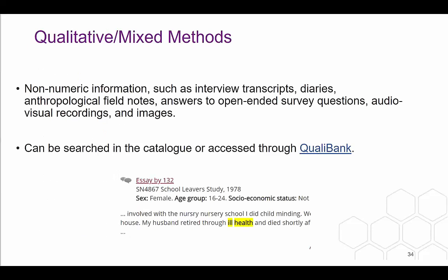The last type of data to be covered today is qualitative and mixed methods data. Qualitative data are non-numeric information — they can be interview transcripts, diaries, anthropological field notes, answers to open-ended questions, audio or visual recordings and images. If you are looking for this type of data in our catalogue, you can filter your search by selecting qualitative or mixed methods as a type of data, or you can access them through Qualibank. Qualibank is a great tool that allows you to search for qualitative data but also within qualitative data for keywords and terms. For example, we can search for the term 'ill health' and get an essay as a result from the School Leavers Survey of 1978, so you can narrow down your search and see if specific terms are mentioned within the resources.